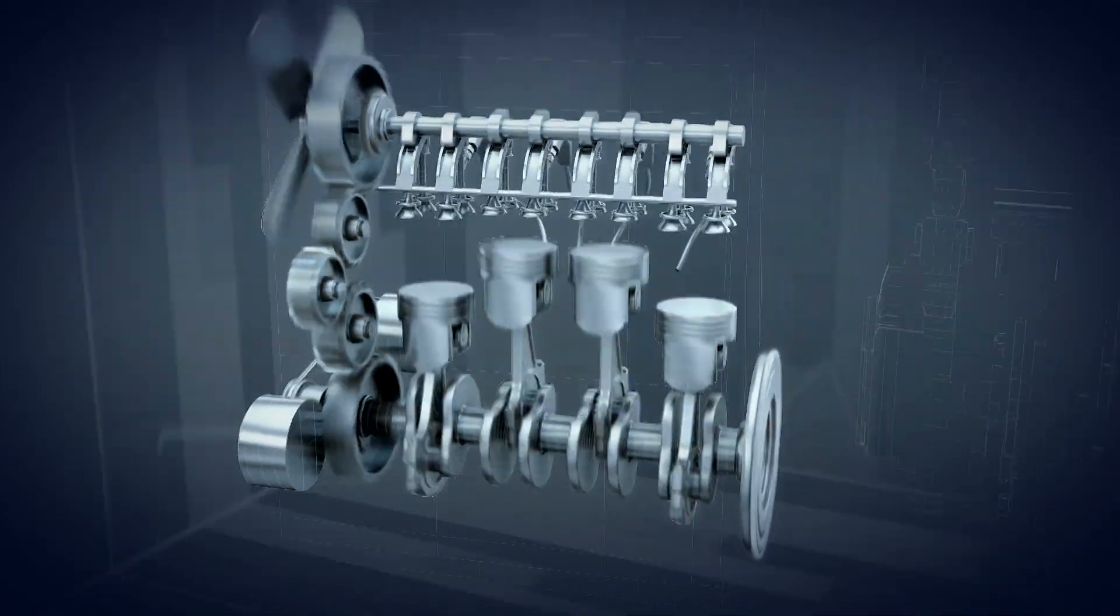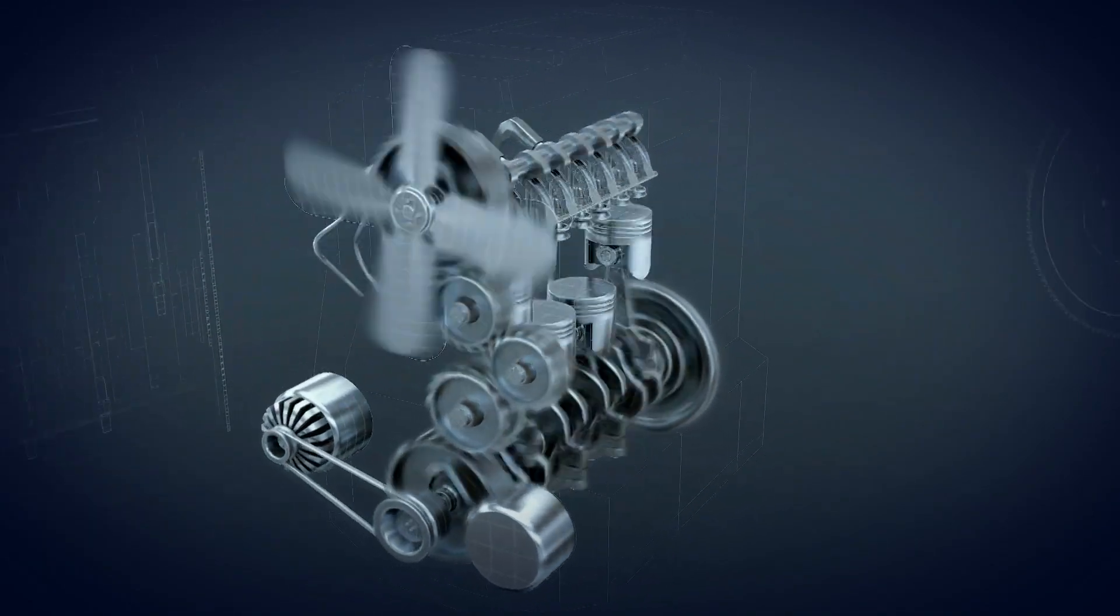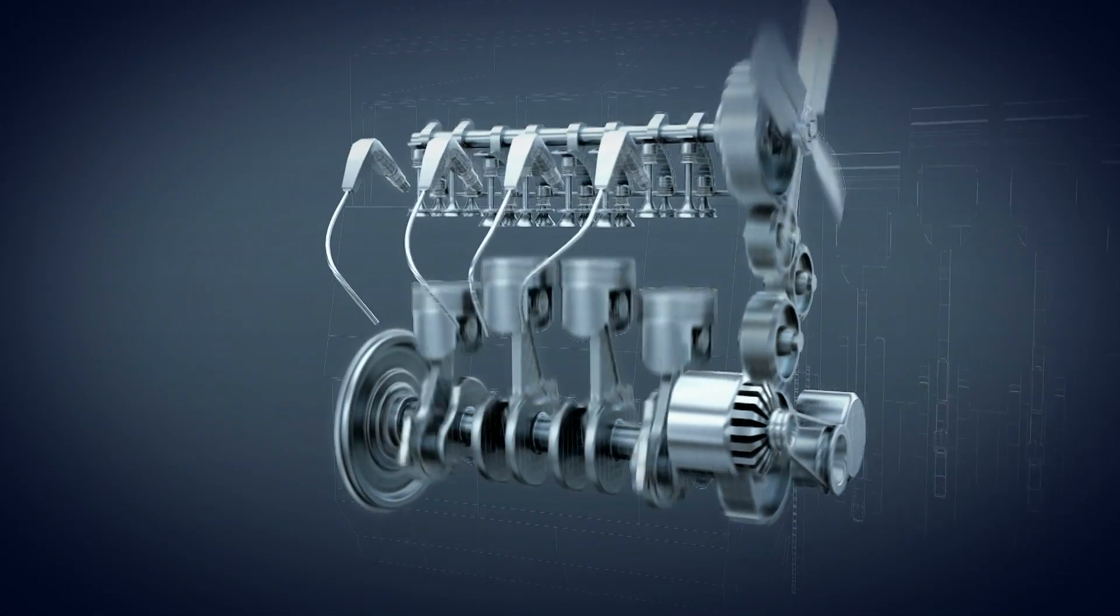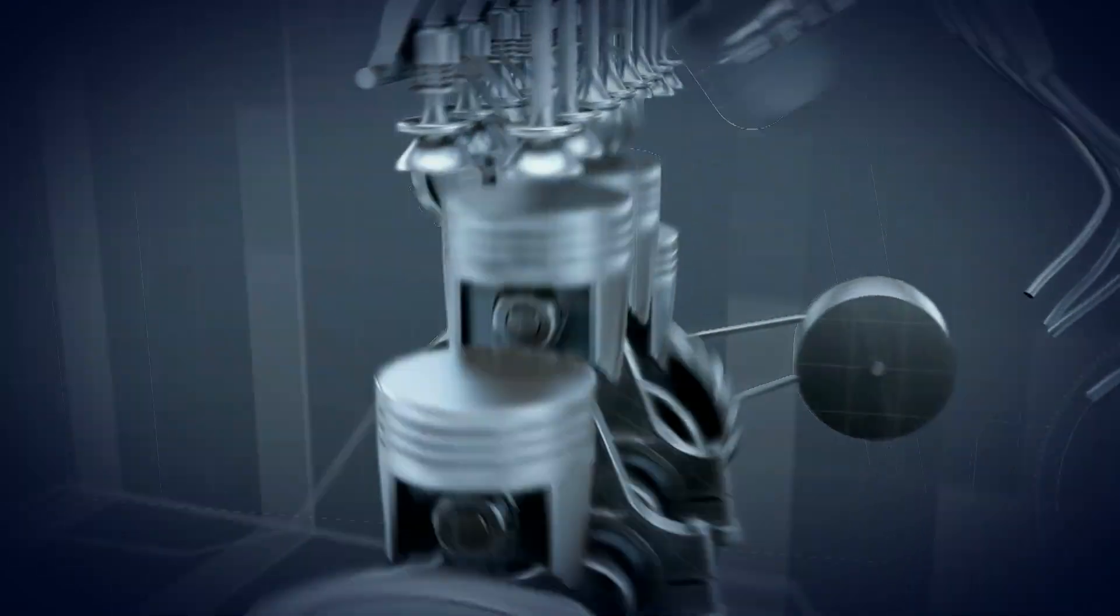A four-stroke engine is an internal combustion engine that converts the chemical energy stored in fuel into a force that powers most cars on the road. This engine undergoes four steps, also known as four strokes, to convert fuel into turning the car's wheels.